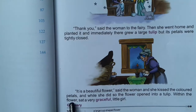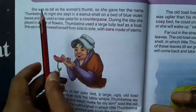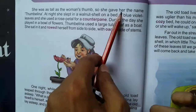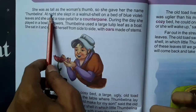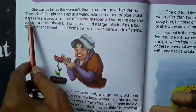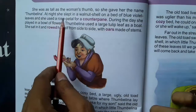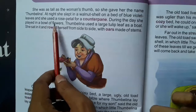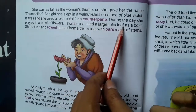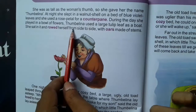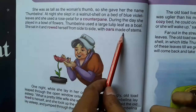Within the flower sat a very graceful little girl. She was as tall as the woman's thumb, so she gave her the name Thumbalina. At night she slept in a walnut shell on a bed of blue violet leaves and used a rose petal for a counterpane. During the day she played in a bowl of flowers, using a large tulip leaf as a boat. She sat in it and rode from side to side with oars made of stems.